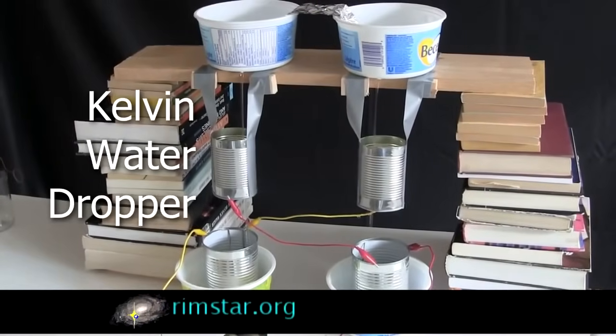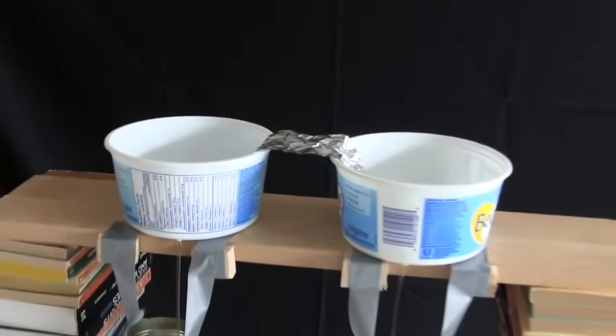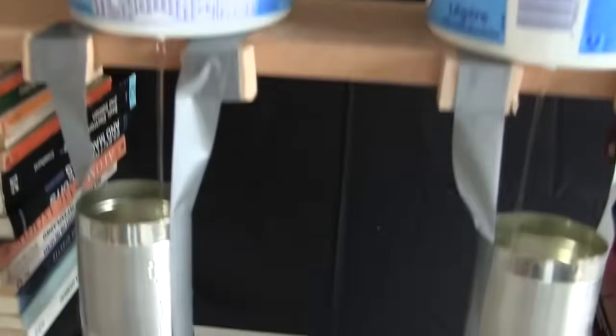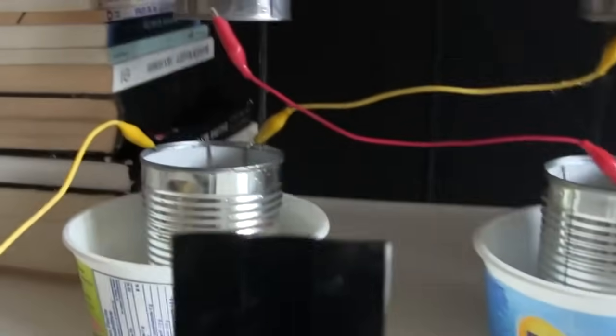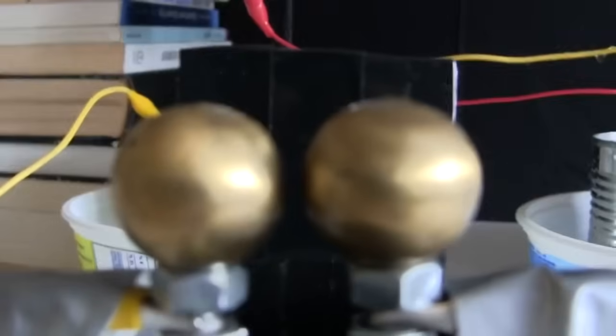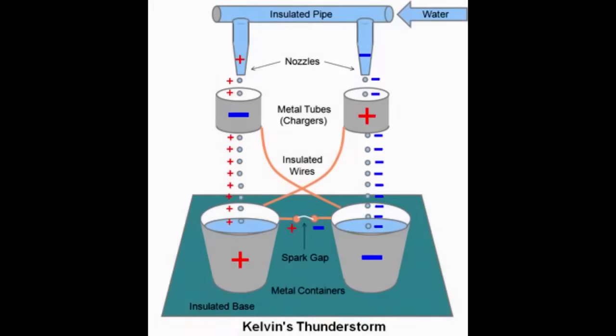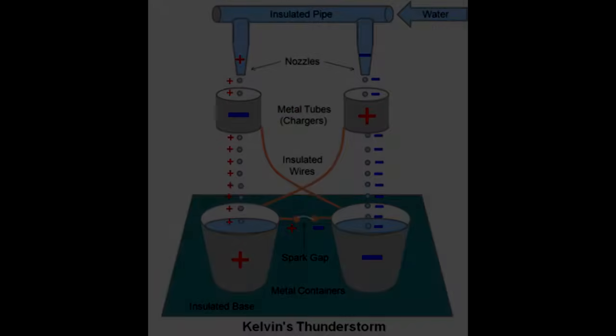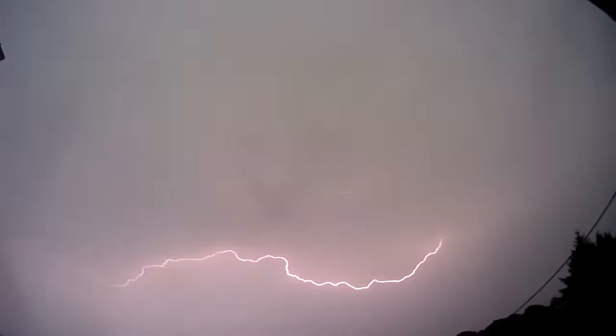Hi gang, this is the Kelvin water dropper. And it's one way to produce electricity from falling water. Water falls from these two containers up here, down through these two cans, into these cans. The result is a spark every now and then down here. Now the Kelvin dropper, invented of course by Lord Kelvin, was meant to show how you get really quite decent static electricity buildups around moving water, most notably in thunderstorms.